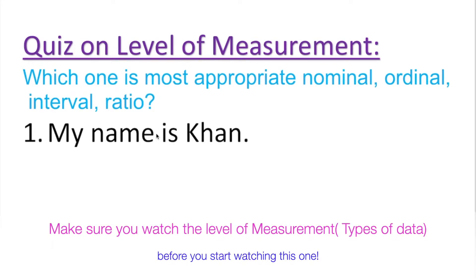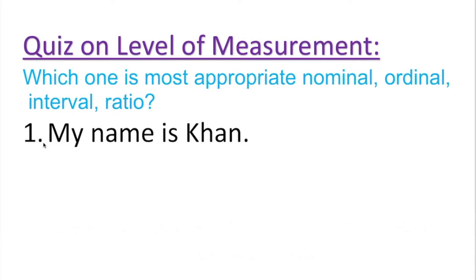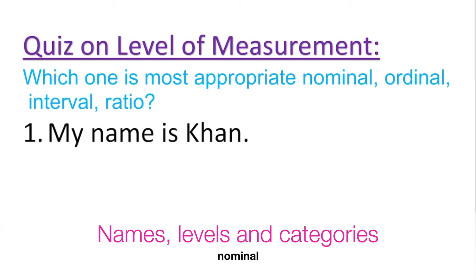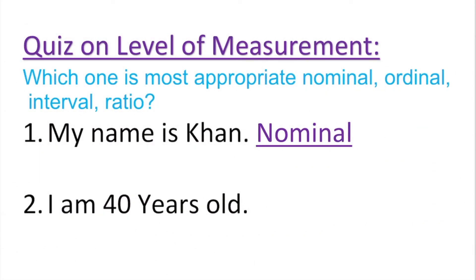Let me give an example with myself that reflects all four levels of measurement. Starting with number one: my name is Khan. So what kind of measurement is that? Name sounds like nominal — that's the most appropriate one. Nominal.